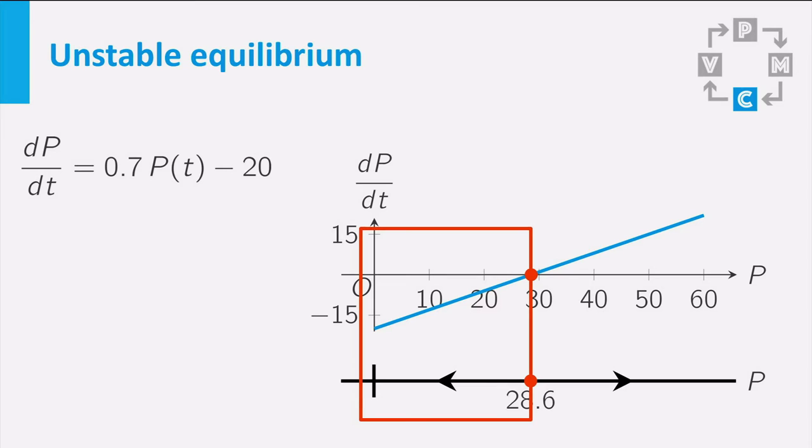When we start with a population below the equilibrium value, the derivative dP/dt is negative, and P will decrease and keep decreasing until there are no rainbow fish left. So each day we sell more fish than the number that hatch from the eggs, and we will end up with an empty aquarium.